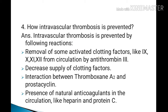How is intravascular thrombosis prevented? Intravascular thrombosis is prevented by: removal of some activated clotting factors like factor 9, 10, 11, and 12 from circulation by antithrombin 3; decreased supply of clotting factors; interaction between thromboxane A2 and prostacycline; and presence of natural anticoagulants in circulation like heparin and protein C.